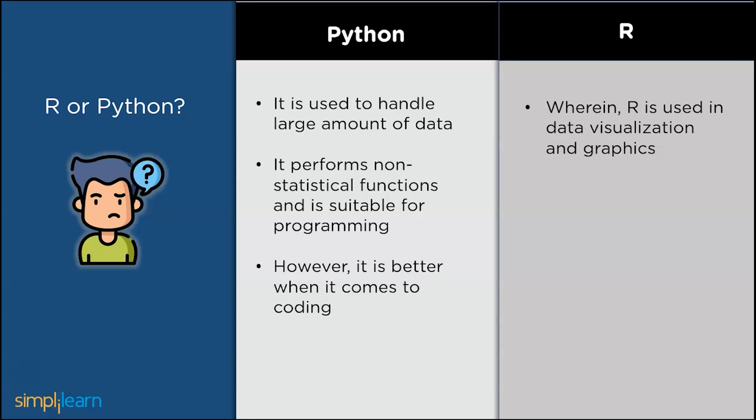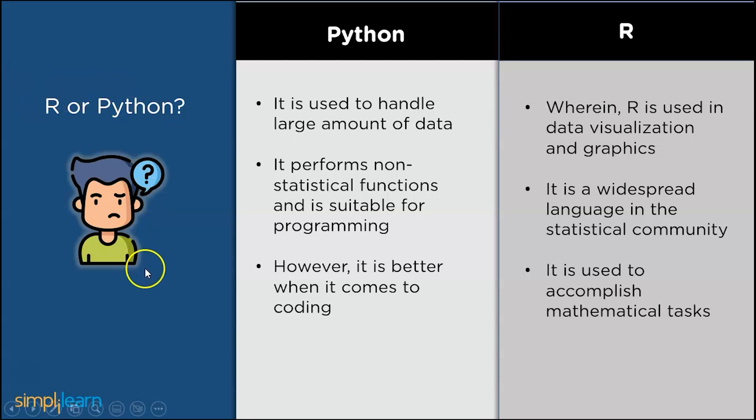Python is used to handle large amounts of data. Python performs non-statistical functions and is best suitable for programming. However, Python is better when it comes to coding. Whereas R is used in data visualization graphics. R is a widespread language in the statistical community. It is used to accomplish many mathematical tasks. So, before concluding the topic,